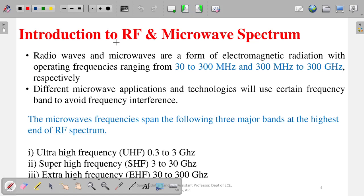Next is some introduction to RF and Microwave spectrums — with this small introduction we will stop here, and in the next lecture we will discuss it in depth. Now, radio wave is a separate thing and microwave is a separate thing. Why it is called a microwave — why the word 'micro' is used — we will discuss that in a later class.